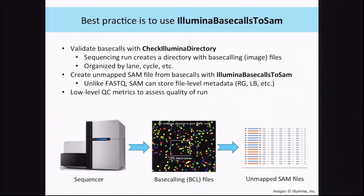We also collect low-level QC metrics about the base calling. Starting from the sequencer, we go to the base calling files — which are essentially images — and from there we go to an unmapped SAM. There's one row per read in the SAM file, and some fields are greyed out right now because we don't have the alignment information yet.